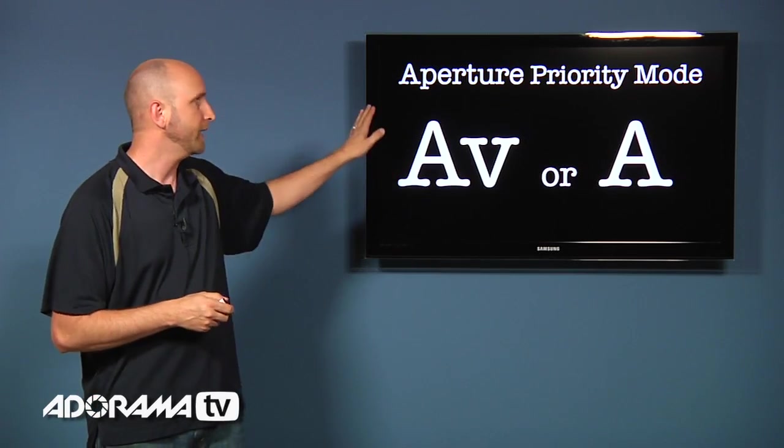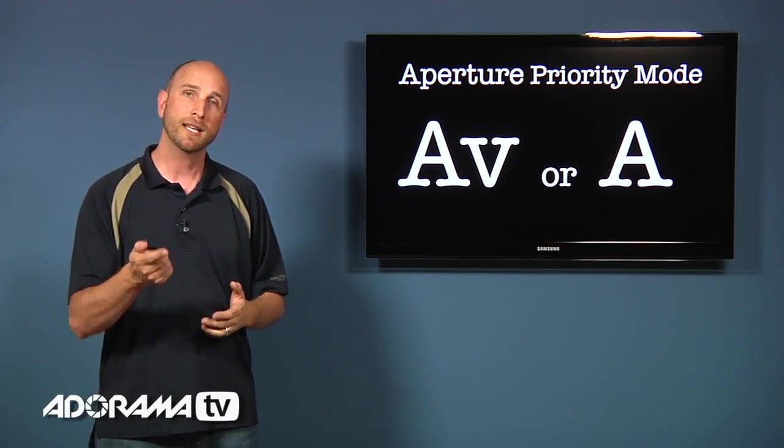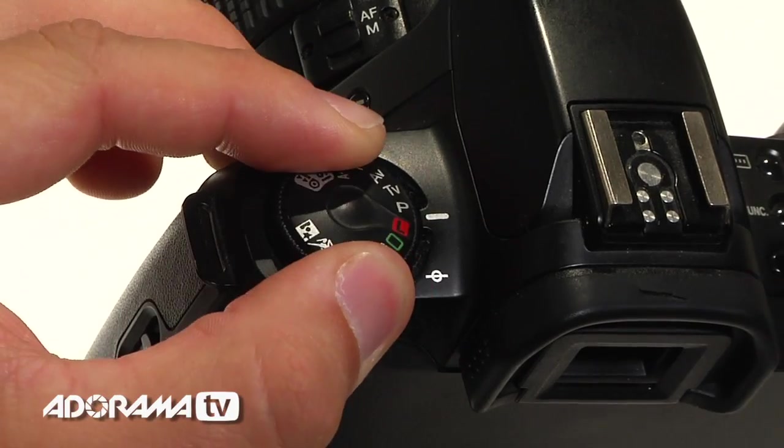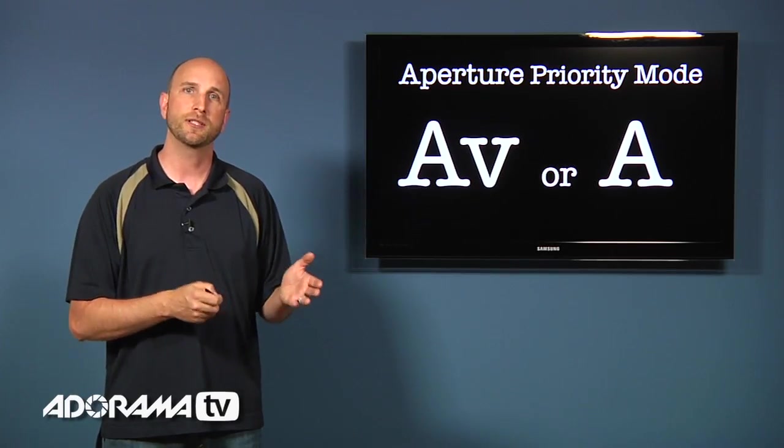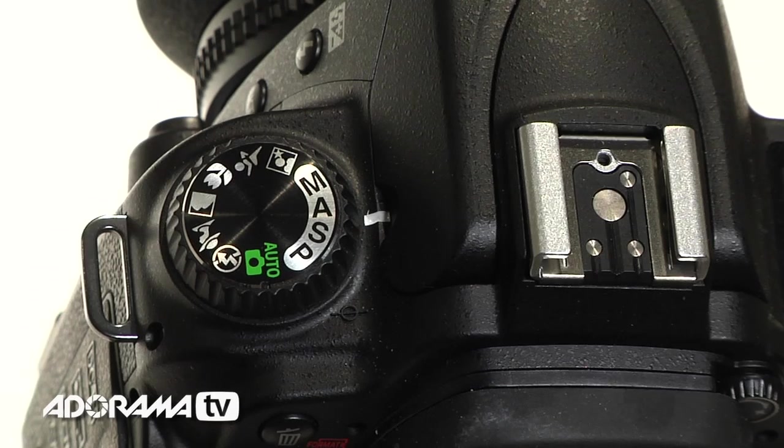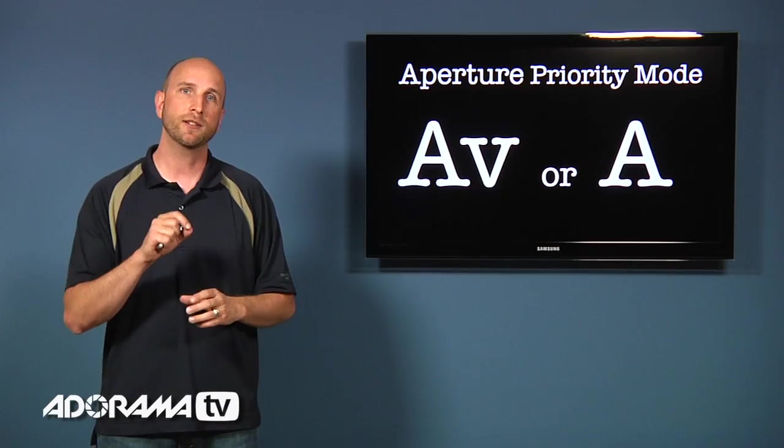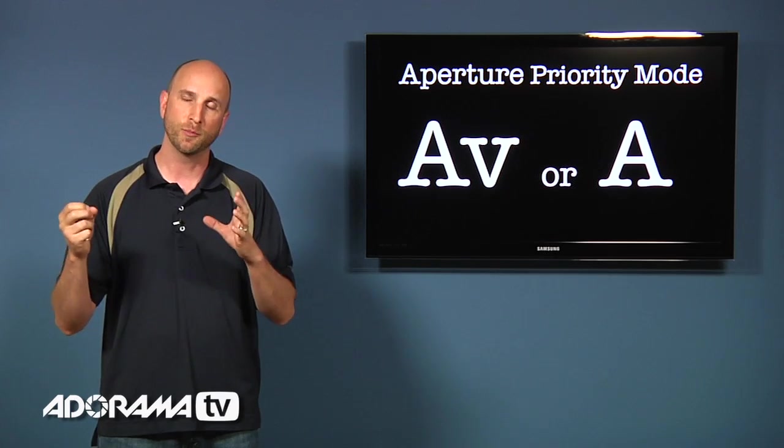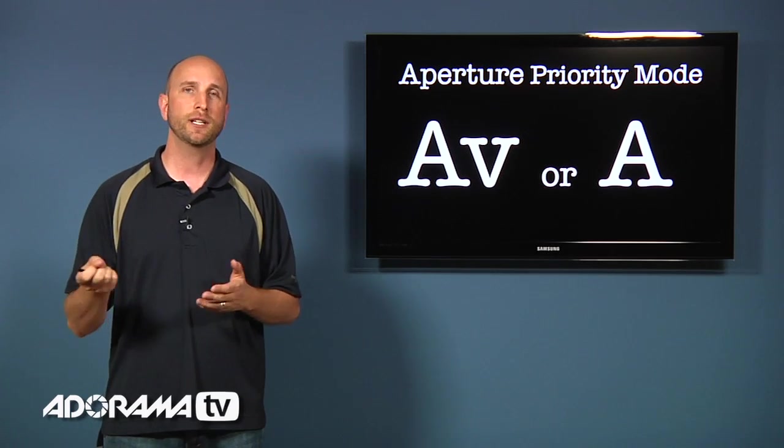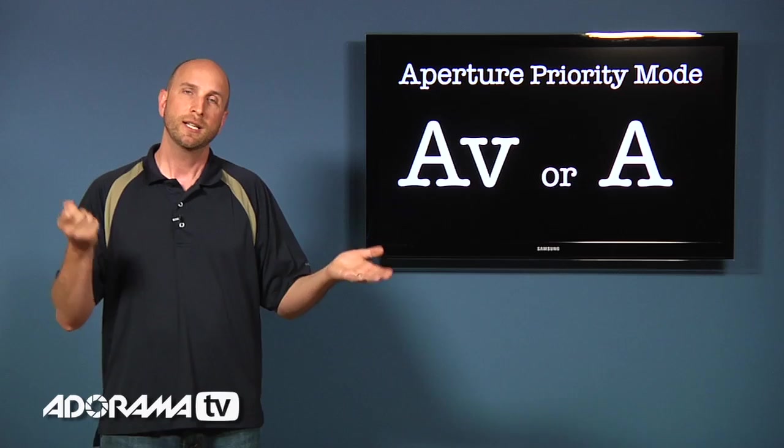The first one is called aperture priority mode. On a Canon it's AV on your mode dial. And that stands for aperture value. On Nikon and other cameras it's just called A for aperture. Now what happens here is you set your camera's aperture value. In other words how wide or how small the aperture opening is. And then the camera will figure out the proper shutter speed. And things will be in balance.